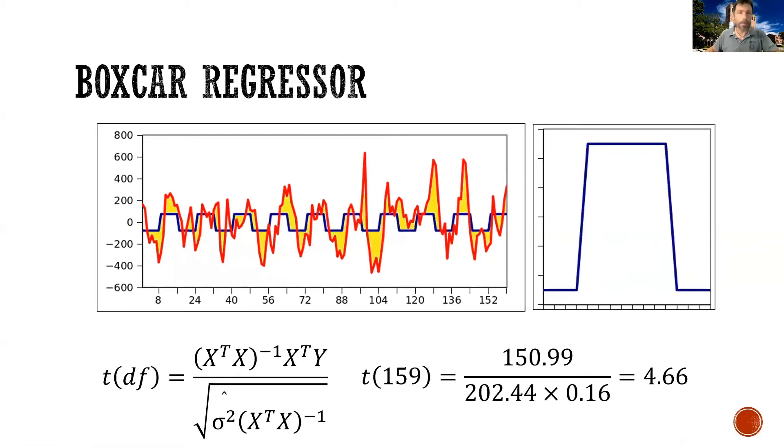And so if we did this, I'm marking in yellow sort of visually what would be the error. And you can derive the value of beta, its variance, and then you can make a t-test out of it. So just putting in relation this voxel, the time series of this voxel to this sort of blocky onset and offset, already gives us a significant t-test.